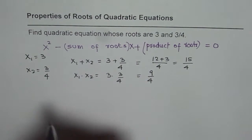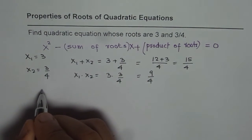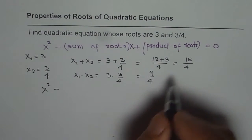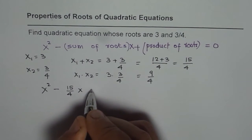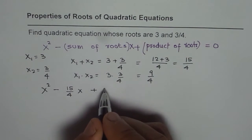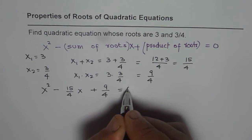So now we can write down our quadratic equation which is x squared minus sum of roots which is 15 over 4x plus product of roots which is 9 over 4 equals to 0.